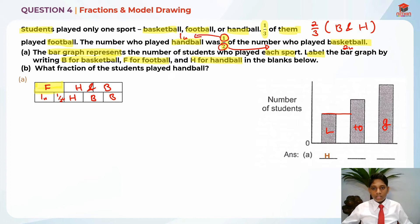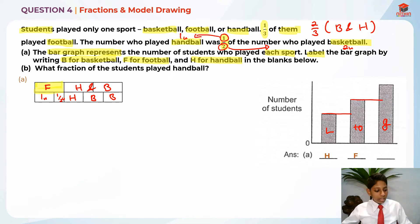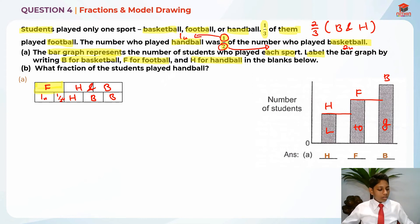Blank number two is the second largest, which is basically football, because football is one and a half units while basketball is two units. So basketball is larger than football, but football is larger than handball. Football should be second, and basketball is last because it is the largest at two units. So the answer is: blank one = H, blank two = F, blank three = B.